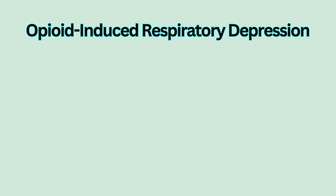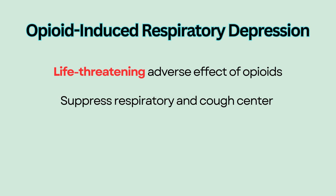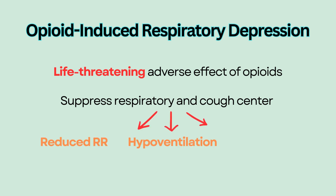Opioid-induced respiratory depression is a potentially life-threatening adverse effect of opioids such as morphine, dilaudid, and fentanyl. Opioids suppress the respiratory and cough center located in the medulla of the brainstem, causing reduced respiratory rate and hypoventilation and resulting in severe hypoxemia.